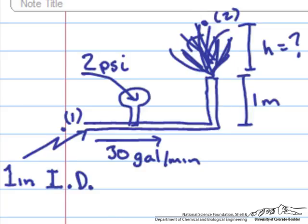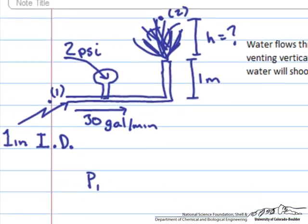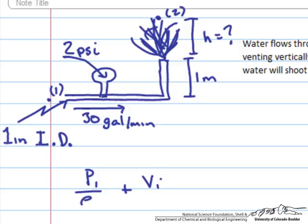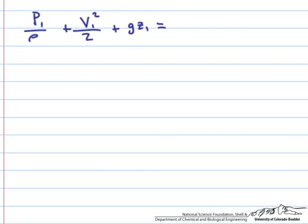If we apply Bernoulli's equation, it says that the pressure at point one over the density plus the velocity at point one squared over two plus gravity times the height at point one is equal to a constant. This constant has to be the same as the constant up at point two. So the mechanical energy at point one has to be equal to the mechanical energy at point two, which is just P two over the density plus V two squared over two plus gravity times Z two.